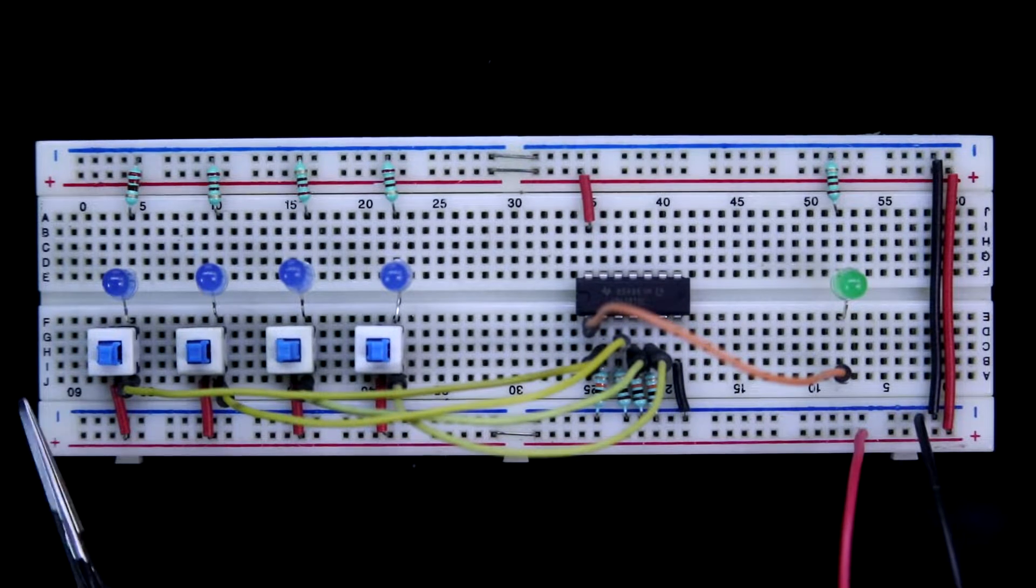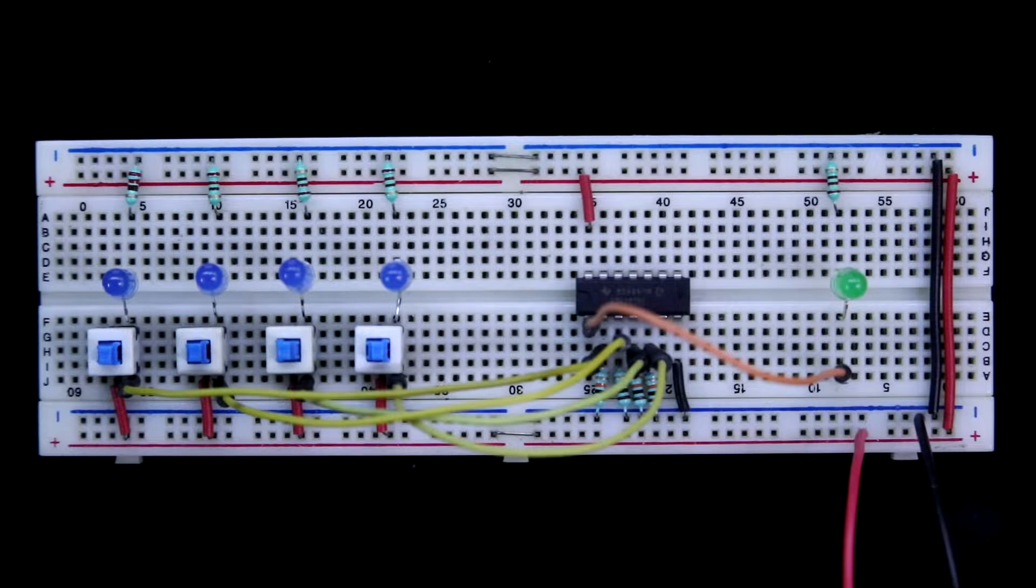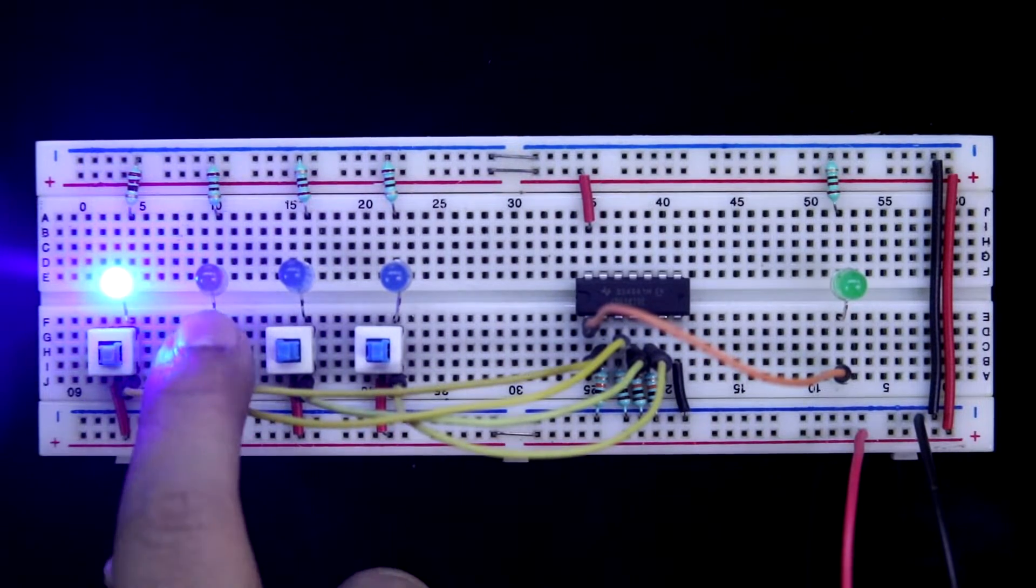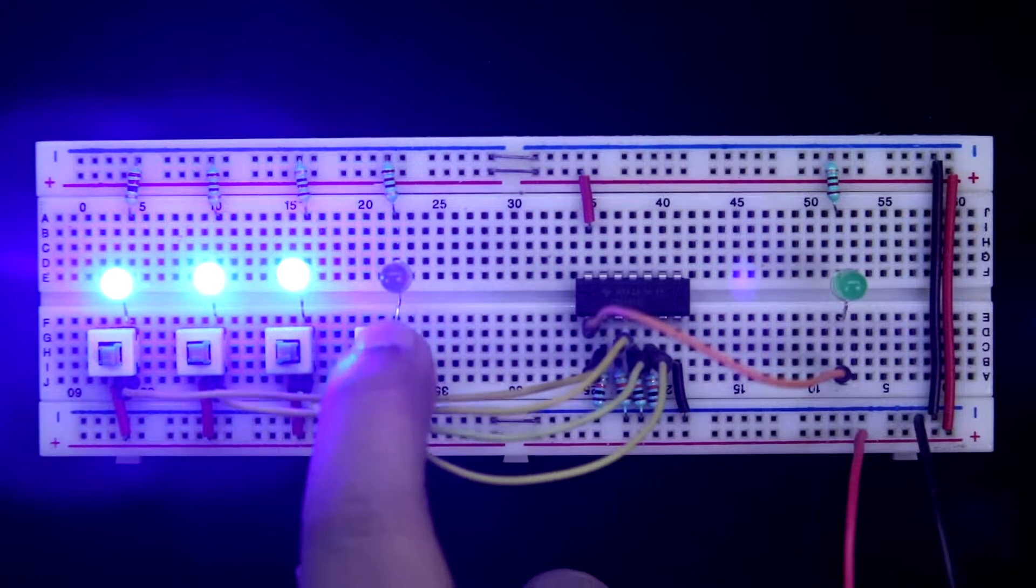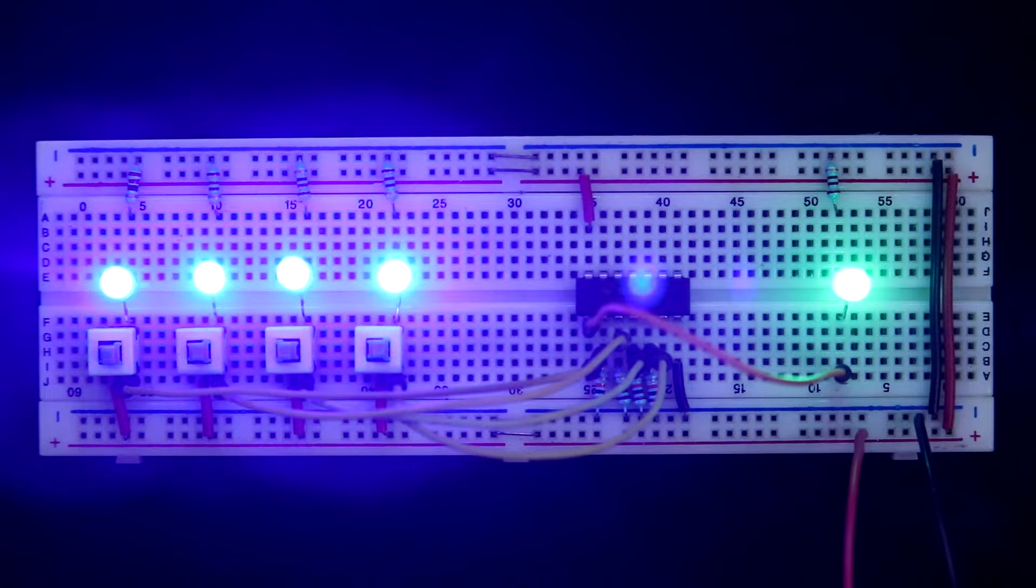Now all the inputs are 0, so we are getting 0. Now we are getting 1. So this is how AND gate works. Let's get started.